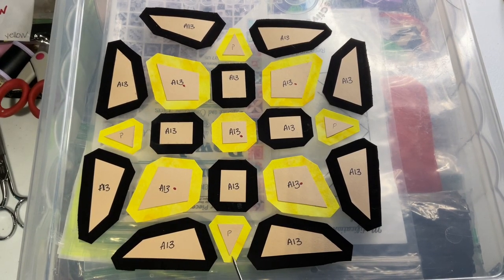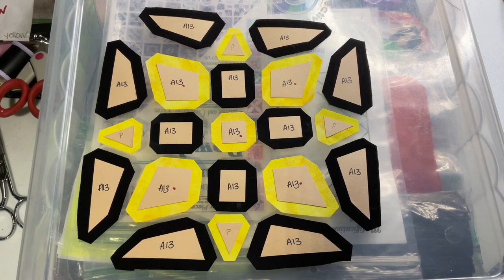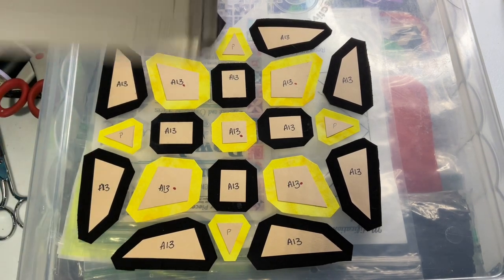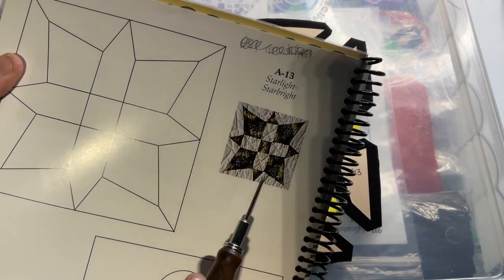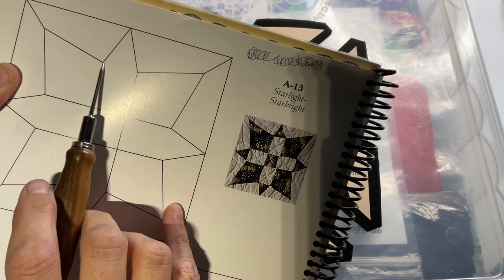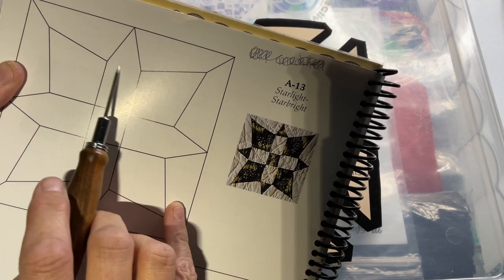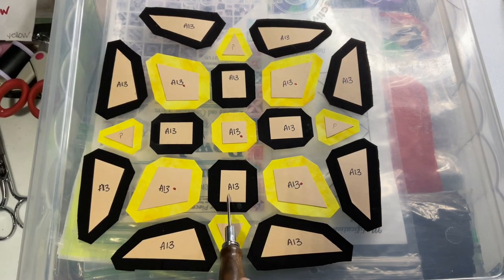Alright, so I've separated the points out so I can make the block look like the photo here. All I did was cut the tip off right here and make a rectangle and a point.